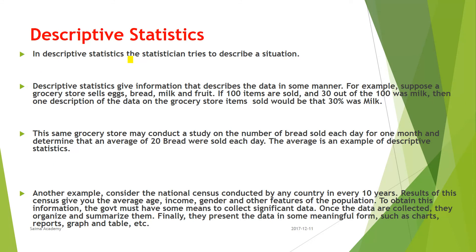In descriptive statistics the statistician tries to describe a situation. Descriptive statistics give information that describes the data in some manner. For example, suppose a grocery store sells eggs, bread, milk, and fruit. If 100 items are sold and 30 out of 100 were milk, then one description of the data would be that 30% of items sold were milk.